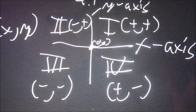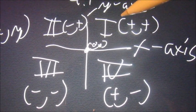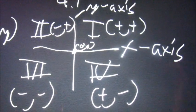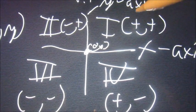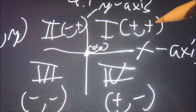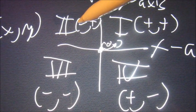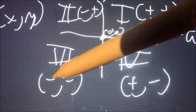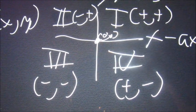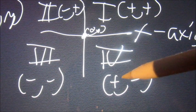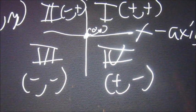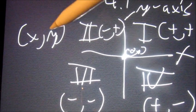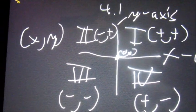The next thing on the graph are the quadrants. We have 1, 2, 3, and 4. To help remember: in quadrant 1, x is positive and y is positive. In 2, x is negative and y is positive. In 3, x is negative and y is negative. In 4, x is positive and y is negative. It always has to be that way. Again, x then y whenever you're plotting things.